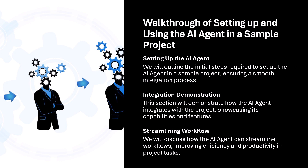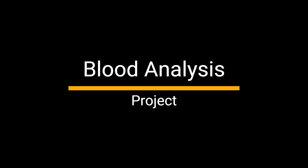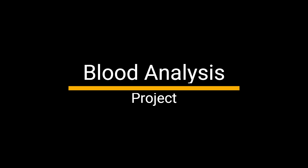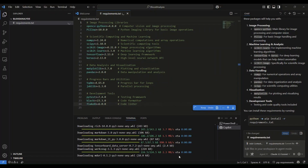In this section, we will demonstrate how to set up and use the AI agent in a sample project, highlighting its key functionalities and best practices to maximize its potential. We will go through the steps to set up the AI agent, demonstrating its integration within a sample project. This hands-on approach will show how it can streamline workflow. During the demo, we will emphasize the key functionalities of the AI agent and discuss best practices for using it effectively to enhance development workflows.